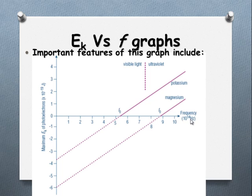You'll notice here that we've got a line drawn for potassium and magnesium, frequency increasing in hertz, and we've got the kinetic energy in joules with a factor of 10 to the negative 19 here rather than trying to include that in our scale.